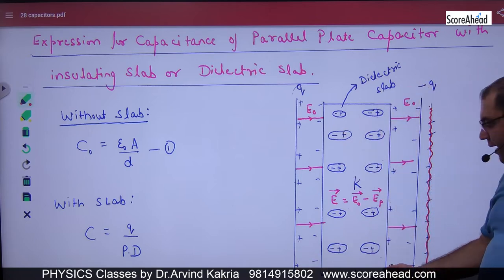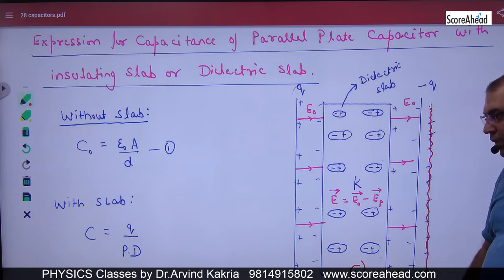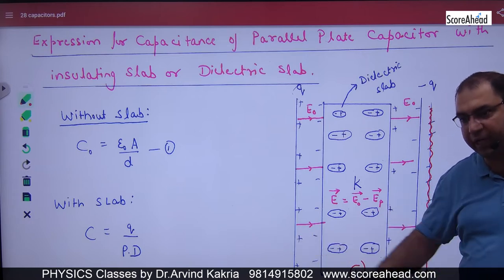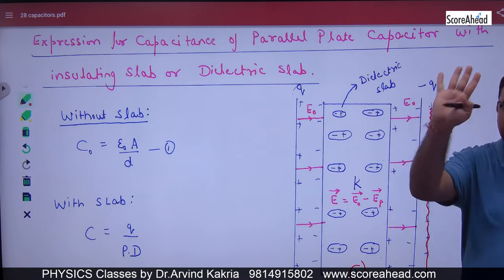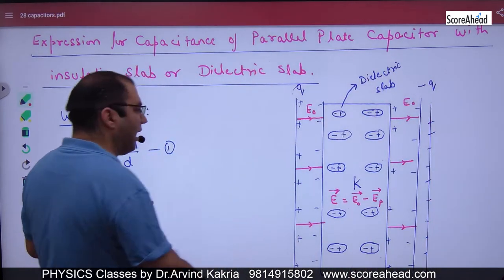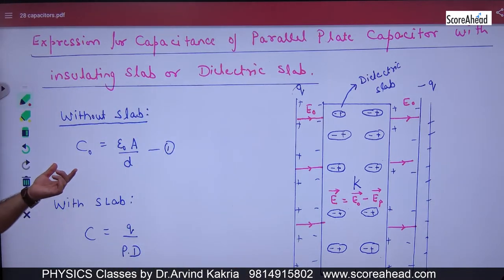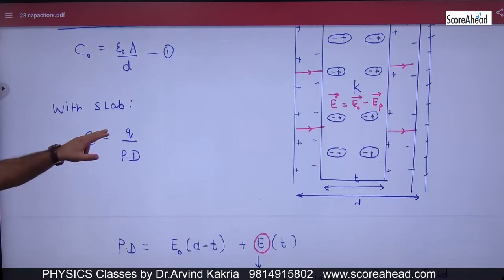What is the thickness of this slab? T. And in the capacitor plates, the thickness is D. Now, if you don't put this slab, what was the capacitance? Epsilon0 A by D. But if you put this slab, then what would you do?